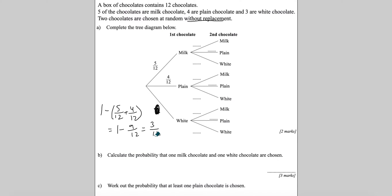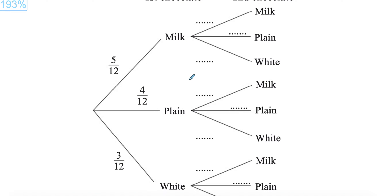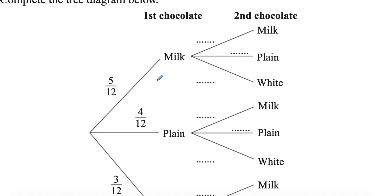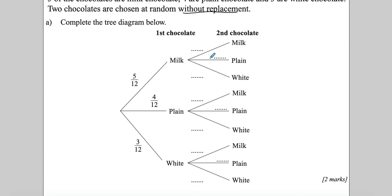Keep in mind that probabilities always add up to one. Now, since we're picking without replacement, the denominator keeps changing. Let's go through one route: if I pick milk first and then milk again, I've taken one milk, so I'm left with 4 milk and 11 chocolates total. For plain, it stays as 4/11, and for white it stays as 3/11.